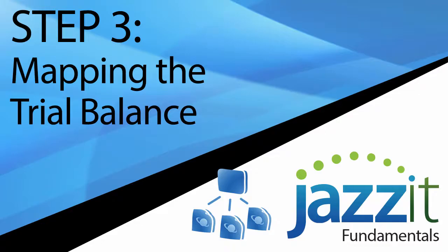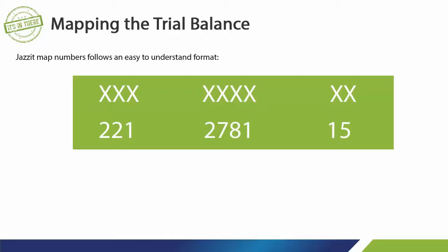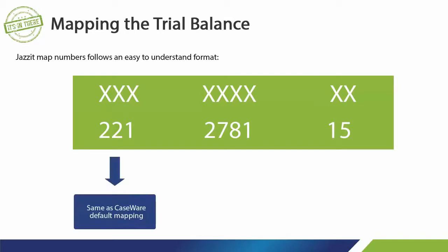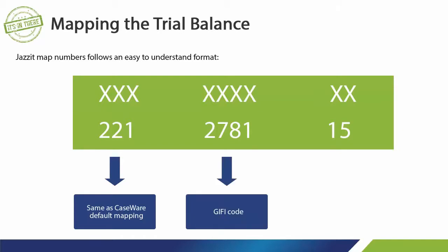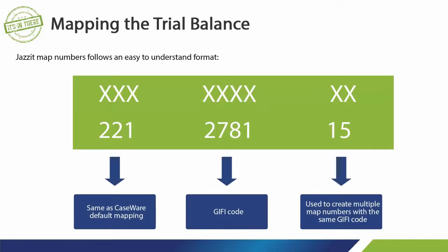Step 3: Mapping the Trial Balance. In this step, we will look at how to map the client trial balance to the JASET map numbers. The JASET map numbers follow an easy-to-understand format. The first three characters of the map number are the same as the default Caseware map number. The next four characters represent the GIFI code, and the last two characters are used to create multiple map numbers for the same GIFI code.